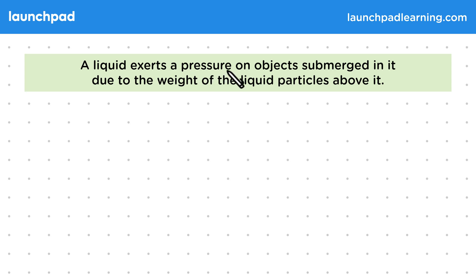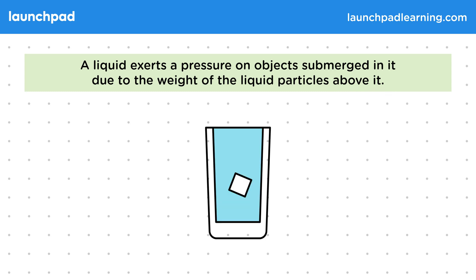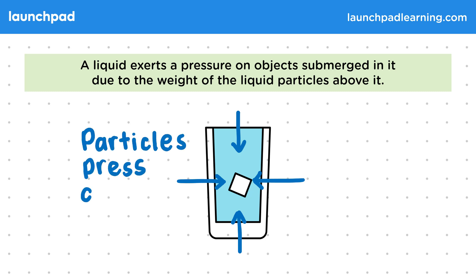A liquid exerts a pressure on objects submerged in it due to the weight of the liquid particles above it. Pressure is force spread out over an area. So the water exerts a pressure on the ice cube as the weight of the water pushes the particles against it.